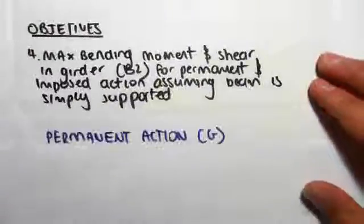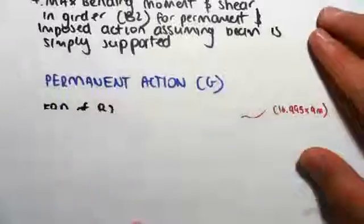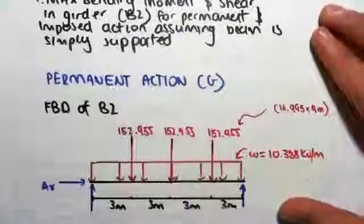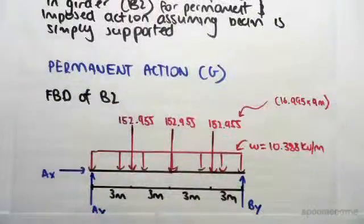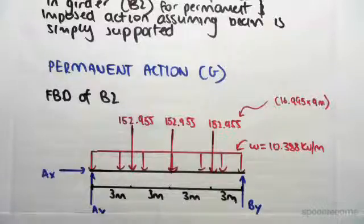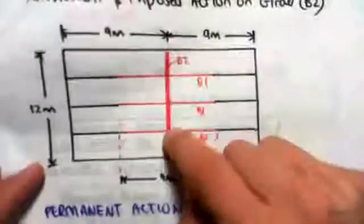So the first thing we want to be doing is to draw the free body diagram of beam 2. I'm going to explain how I achieve this. If we look back at what beam 2 actually is, beam 2 is this internal girder.